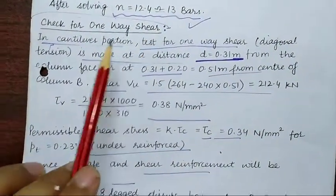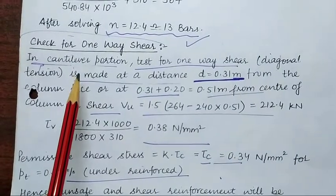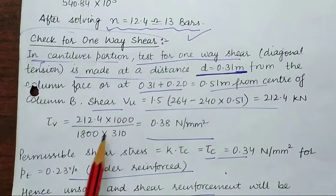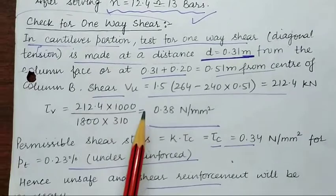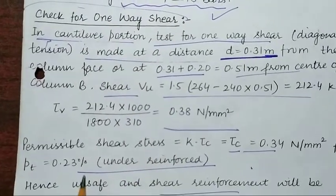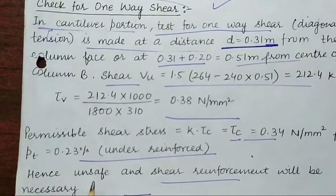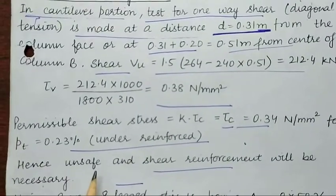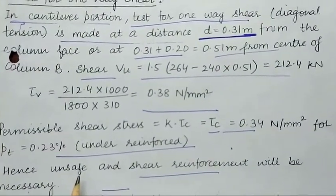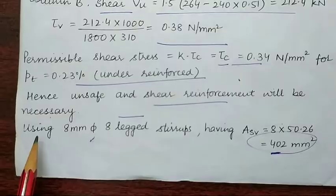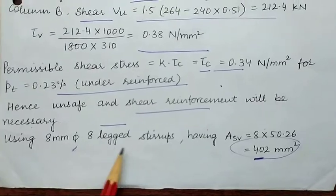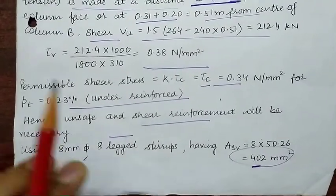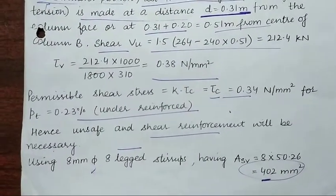The last step is the check for one-way shear. The critical section is at distance d from the face of the column. Calculating τv and τc, we find τv is greater than τc, so one-way shear is unsafe at a depth of 310 mm. To satisfy this code requirement, we provide shear reinforcement using 8 mm diameter, 8-leg stirrups with a cross-section area of 402 mm².